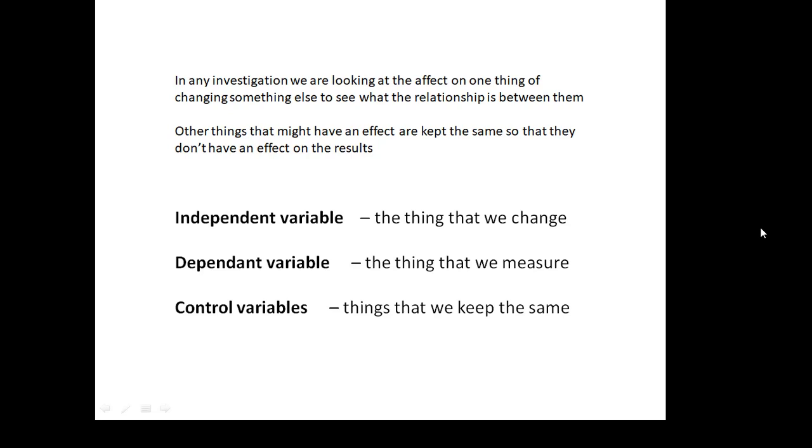Independent variables. The independent variable is the thing that we change. The dependent variable is the thing that we measure. It's what we're interested in because the dependent variable is going to depend on the independent variable. And then the things that we keep the same, the things that we're not interested in, they are our control variables. So independent, dependent, and control are the three types of variable.